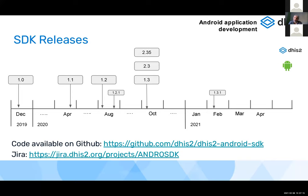A week ago we released version 1.3.1, which is basically 1.3 with some bug fixes. In April we are going to have version 1.4, which will be used by the new Android application also published in April and compatible with DHIS2 2.36.